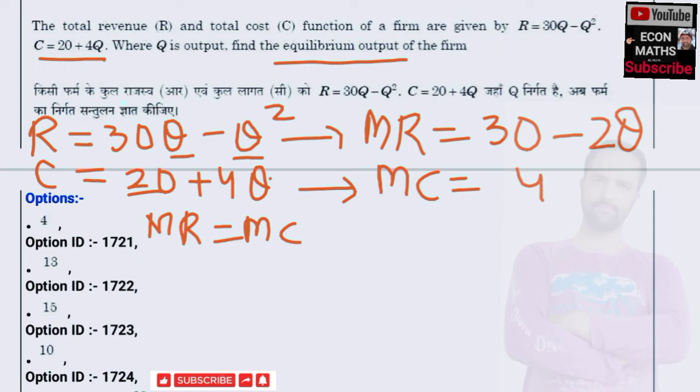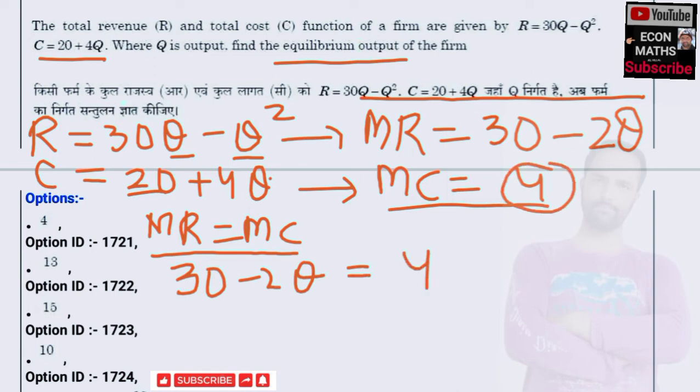As I told you, equilibrium requires marginal revenue equals marginal cost. This is our marginal revenue, this is our marginal cost. Let's equate them: 30 - 2Q = 4.